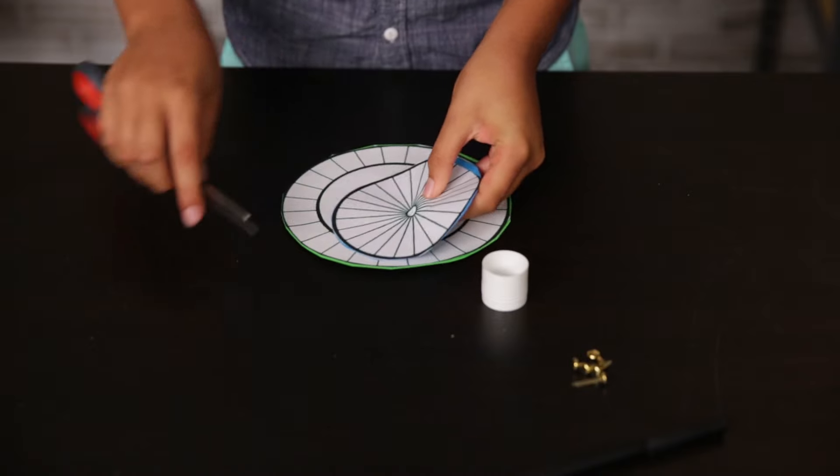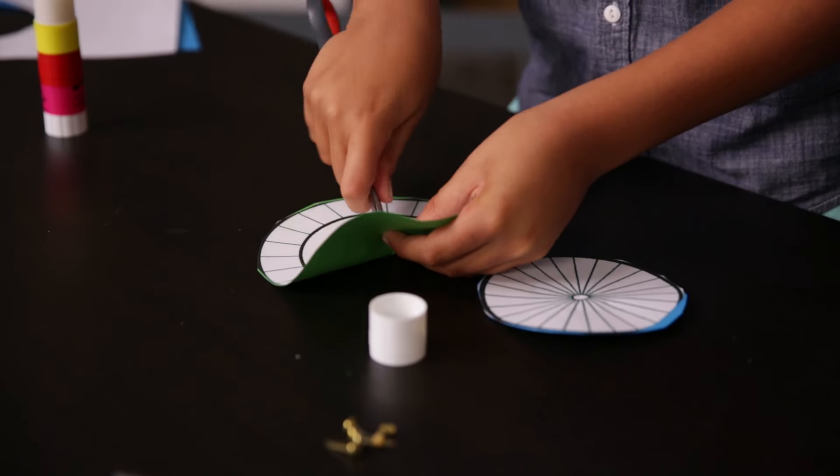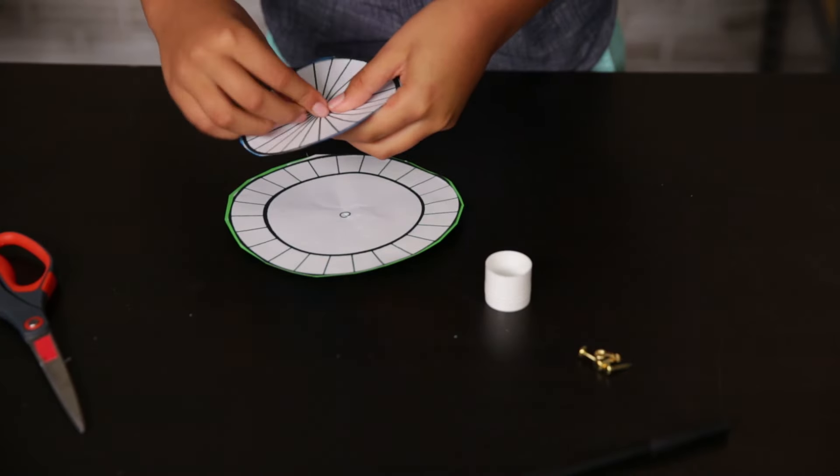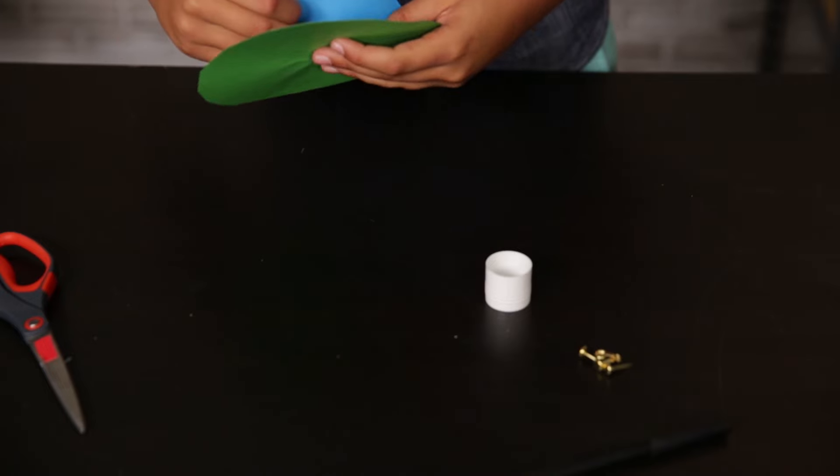Next, make a small hole in the center of each circle. You can use the scissors to get started. Now lay the small circle on top of the big one. Use the paper fastener to connect the two. If you've done this right, the small circle should spin.